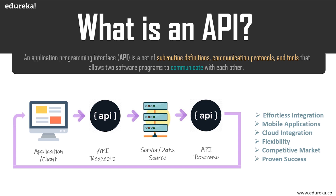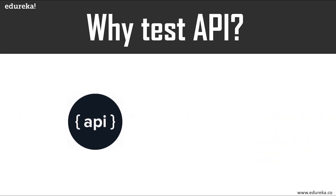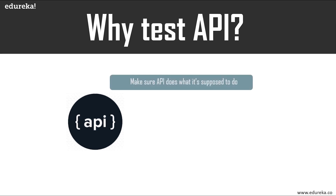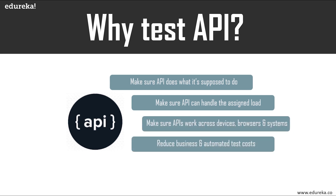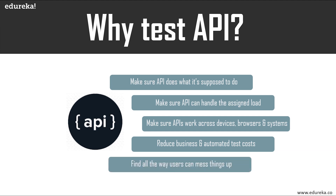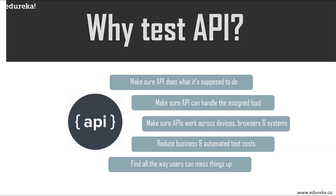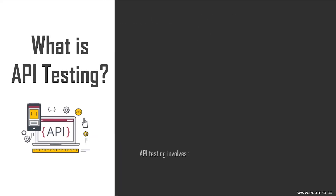If an API doesn't work efficiently and effectively, it will never be adopted regardless of whether it is free or not. If an API breaks because errors weren't detected, there's a threat of not only breaking a single application but an entire chain of business processes. So the solution is to test APIs before they're put to use. You want to be sure they're doing what they're supposed to do, handling the maximum load, working across different devices, browsers, and operating systems, and finding all the ways users can mess things up.